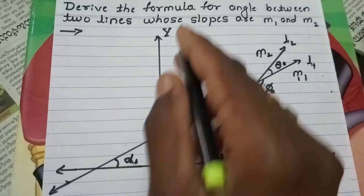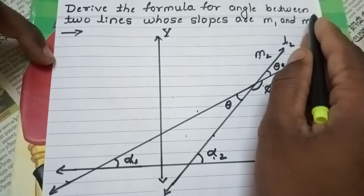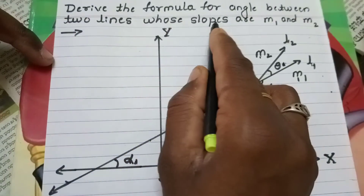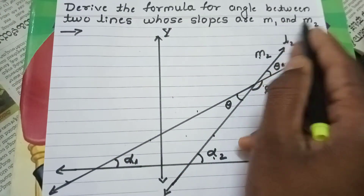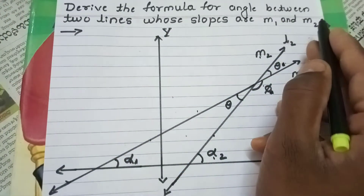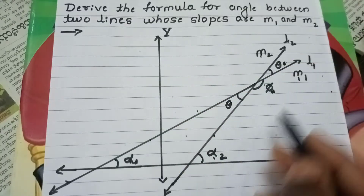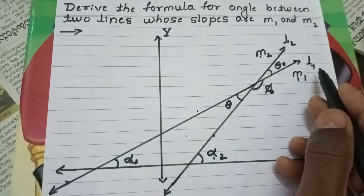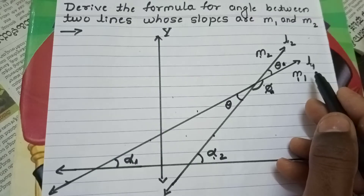We will derive the formula for the angle between two lines whose slopes are M1 and M2. Consider two non-vertical lines L1 and L2.